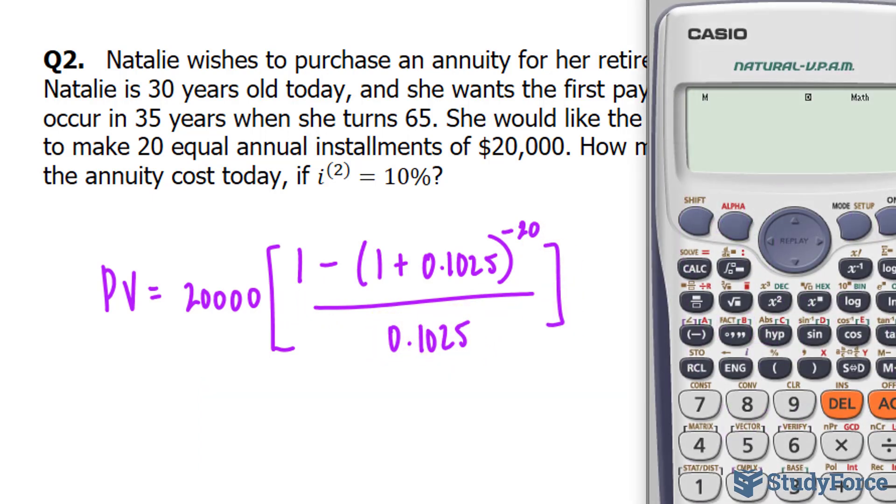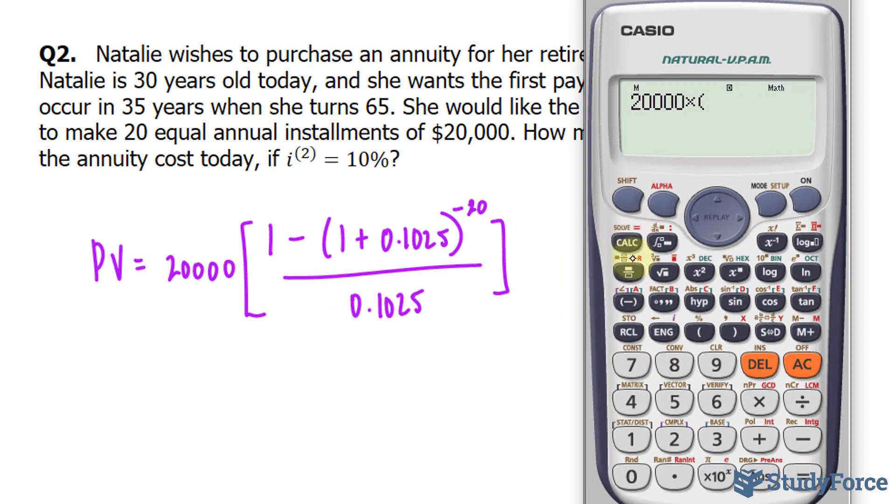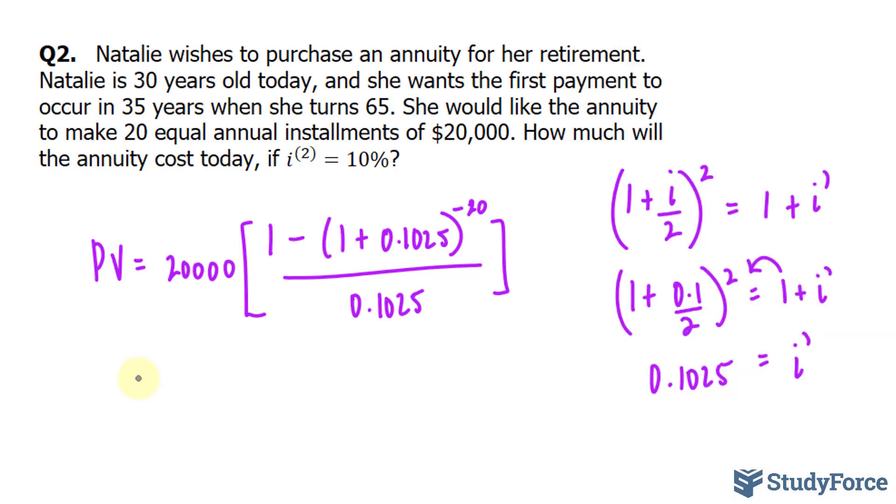Now using our calculator again, we have 20,000, multiply 2, and in parentheses, if you have a calculator like this, you can open up a fraction and put in 1, take away, open parentheses, 1 plus 0.1025, raise to the power of negative 20. And at the bottom, it's 0.1025 again. The present value when she's 65 years old for this particular account is 167,405 decimal, and you want to carry those decimals.